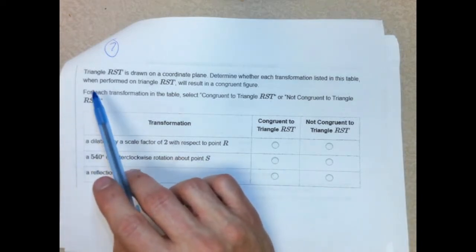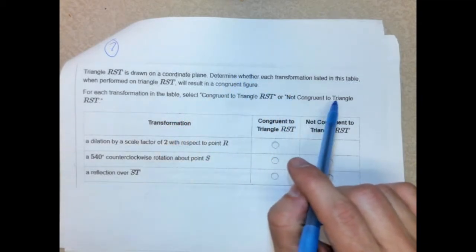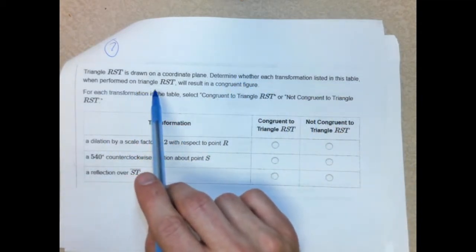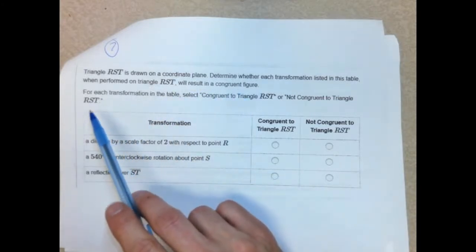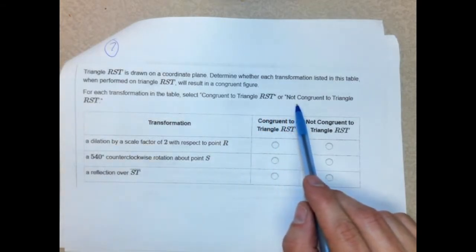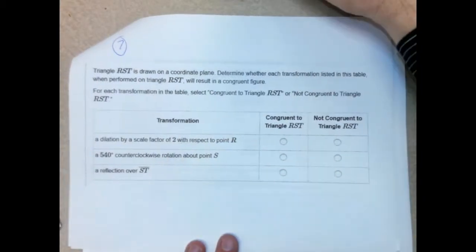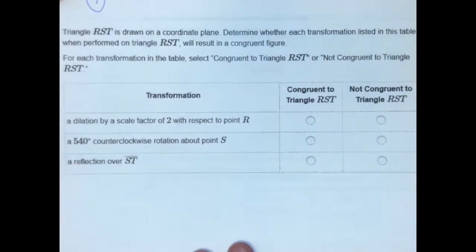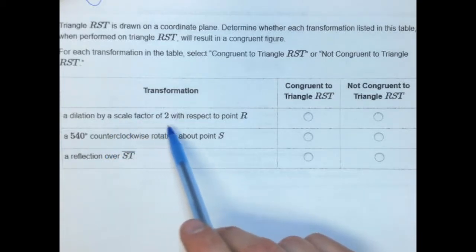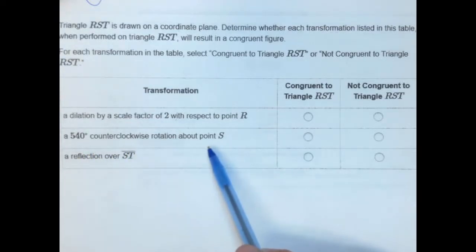Number seven. Triangle RST is drawn on a coordinate plane. Determine whether each transformation listed in this table when performed on triangle RST will result in a congruent figure. For each transformation in the table, select congruent to triangle RST or not congruent to triangle RST. And you're given three things here. So you're given three transformations, right?